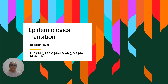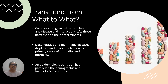As the name suggests, it is something about transition. Transition from what to what? Basically, there were three kinds of transition: the transition of diseases, the demographic transition, and the transition in technology, modernization, and urbanization.